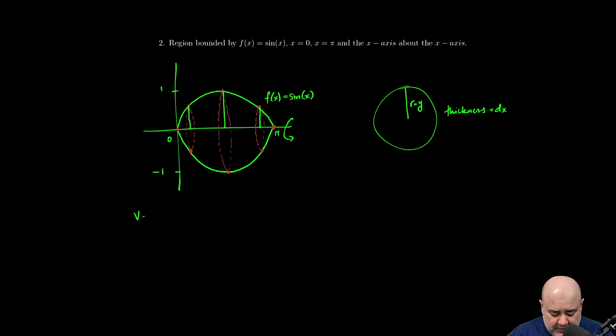So as before, volume is the integral from where we start slicing to where we stop slicing. We start slicing at zero on the left end, so the integral will start at zero. We'll go up to pi because that's where we stop slicing.